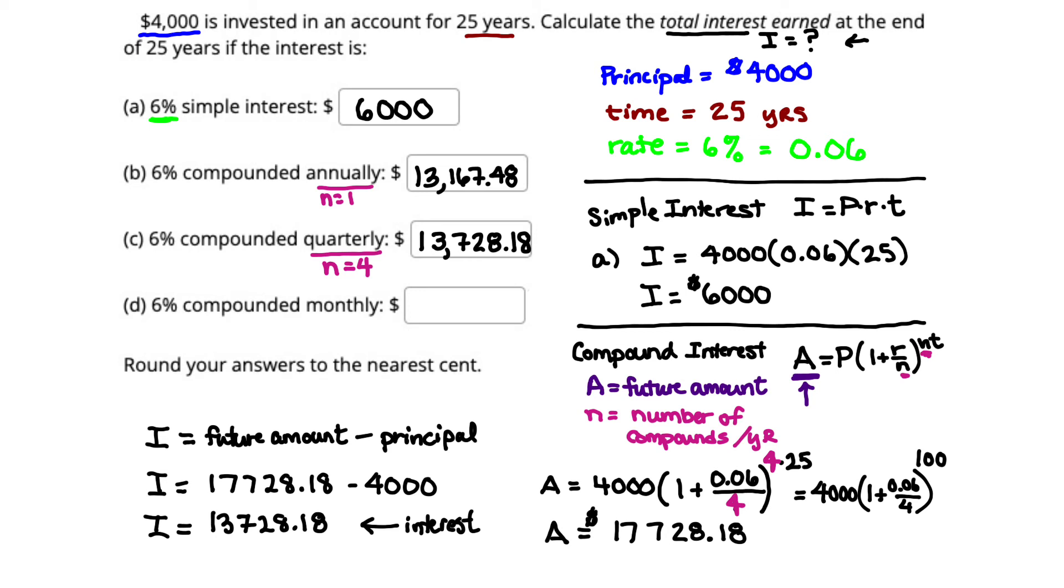I hope it's going well. I hope the calculations are going well. Last one. You can probably do it without my help, but I'll just put it in to make sure we finish up and everything is working out properly. For that last account, we are doing 6% compounded monthly. This time, the number of compounds per year are going to be 12 because we're compounding each month, and there are 12 months in a year.